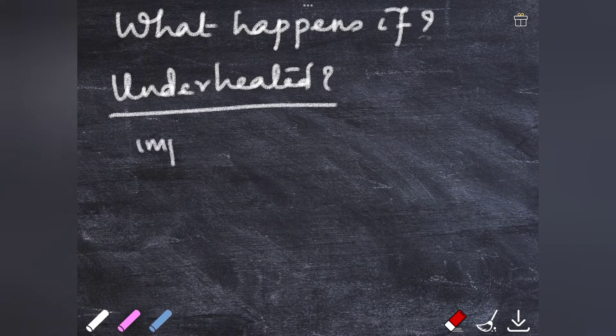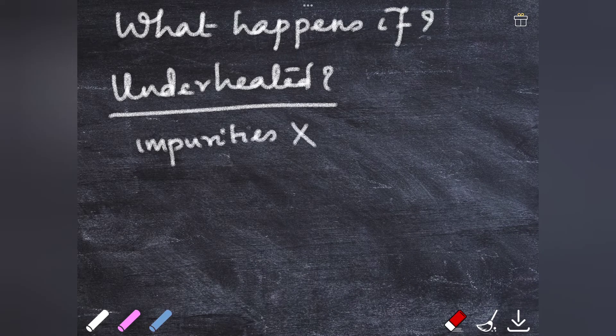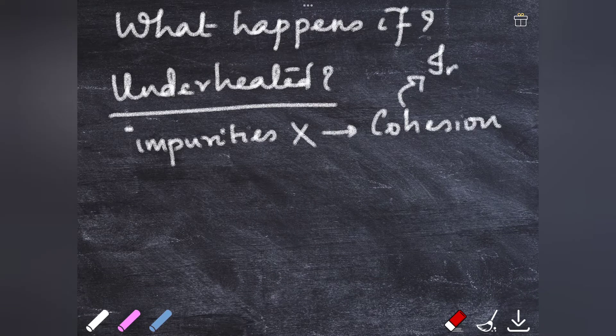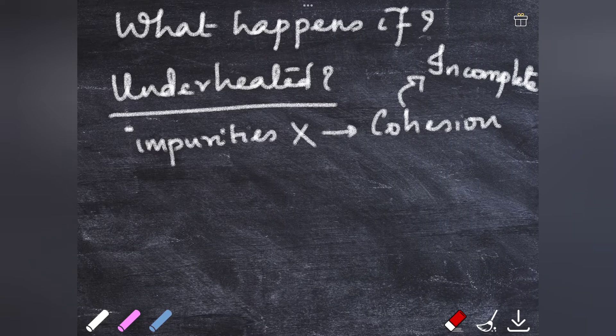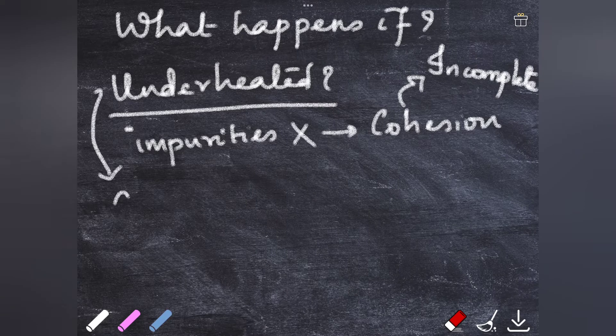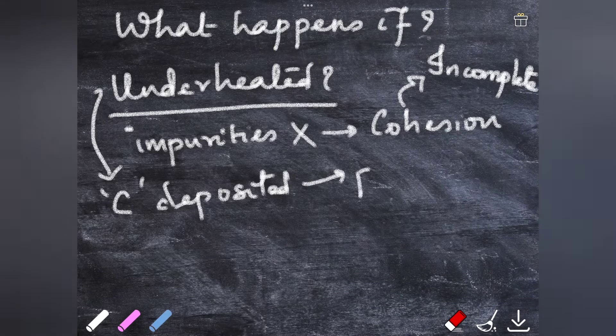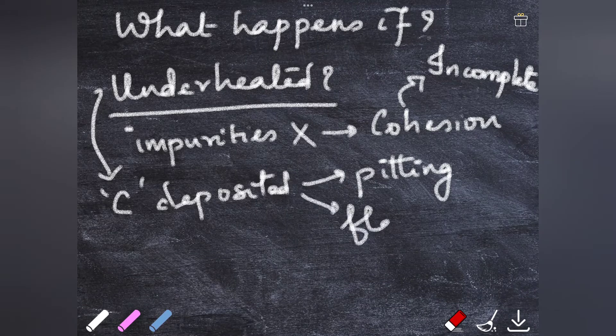So the impurities that are to be removed will not be completely removed. The cohesion or the fusion is going to be incomplete. The incomplete heat is going to deposit carbon on the surface of the restorative material, causing pitting or flaking of the restoration.